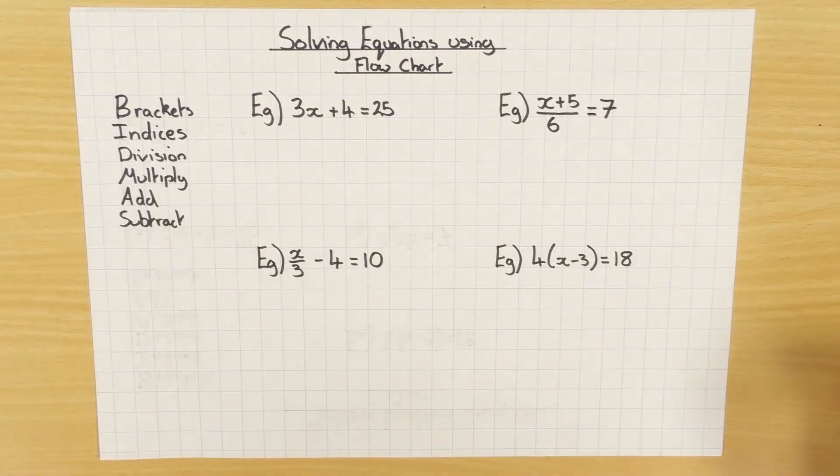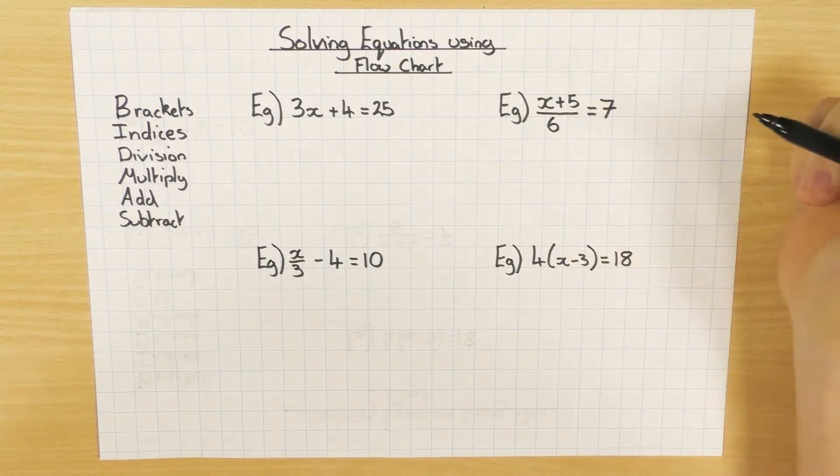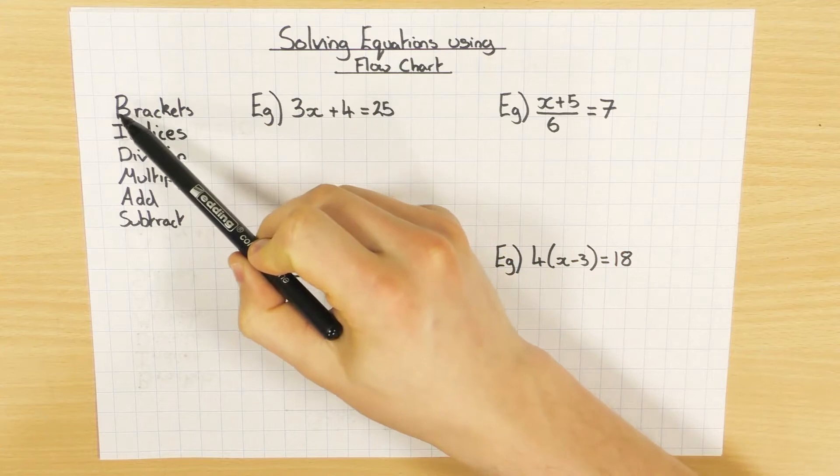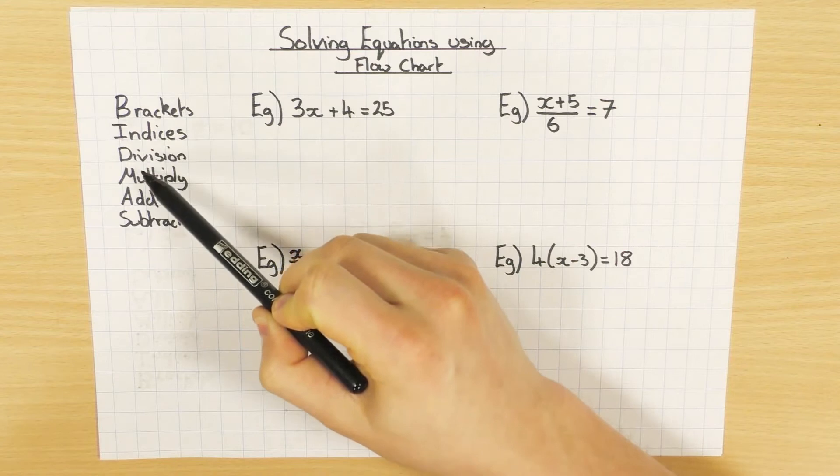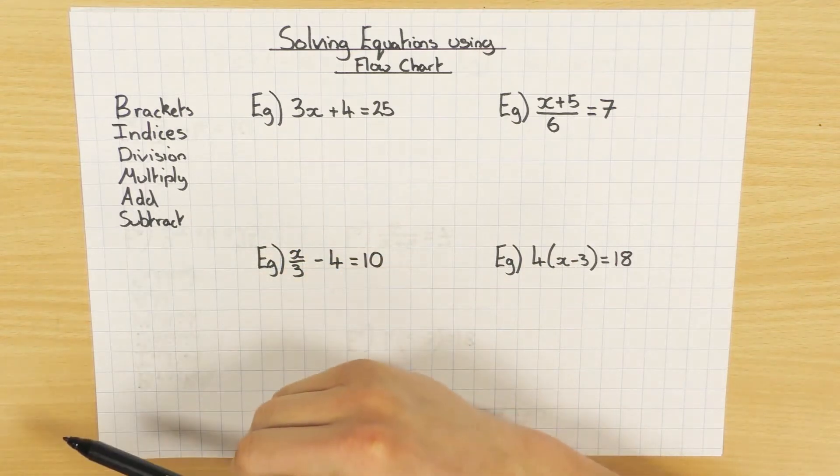Okay guys, we're going to have a look at solving linear equations using the flowchart method. So before we get started, we have to remember BIDMAS. So this is the order we need to do things: brackets, indices, division, multiplication, addition, and subtraction.